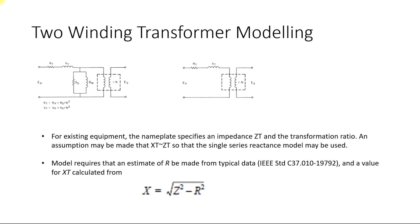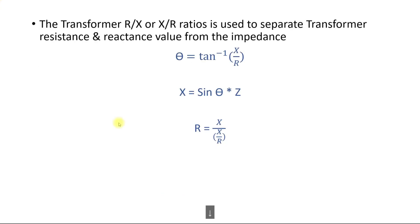To calculate R and X individually, you need the X/R ratio, which is typically provided on a transformer datasheet. If the Z value and X/R ratio are both available, you can calculate them separately using: theta equals tangent inverse of (X/R), X equals sine(theta) times Z, and R equals X divided by (X/R). Using these formulas, you can individually calculate R and X from Z and the X/R ratio.